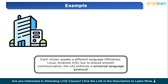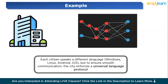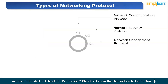Those different languages can be compared to operating systems like Windows, Linux, Android, and iOS. To ensure smooth communication, the city enforces a universal language protocol that everyone must follow — just like how the internet operates using network protocols. Without these defined rules, people in the city would descend into chaos, with devices unable to understand each other. This depicts why there is a need for a universal language protocol.